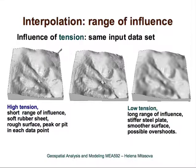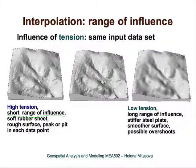Here we have a surface interpolated from the same input data set with different tension values. The first surface has high tension, meaning there is a short range of influence of each point. The surface behaves like a soft rubber sheet and creates a peak or pit at each data point. The influence of each data point is over a very short distance, and then the surface goes rapidly to the trend. There is a lot of bias towards the given data points.